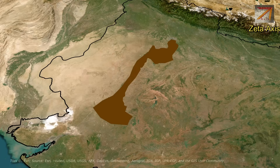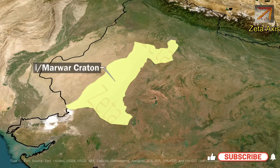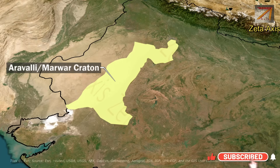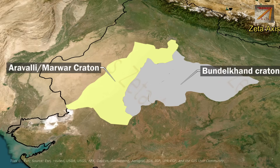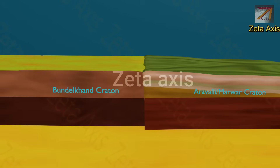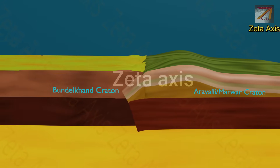The Aravalli hills are one of the oldest ranges in the world. They were formed around 2.5 billion years ago due to the collision between two cratons. The Marwar craton, which today lies in the northwest of the Aravalli range, collided with the Bundelkhand craton, which lies in the southeast of the Aravalli range. This collision occurred over different phases and it created the Aravalli hills.